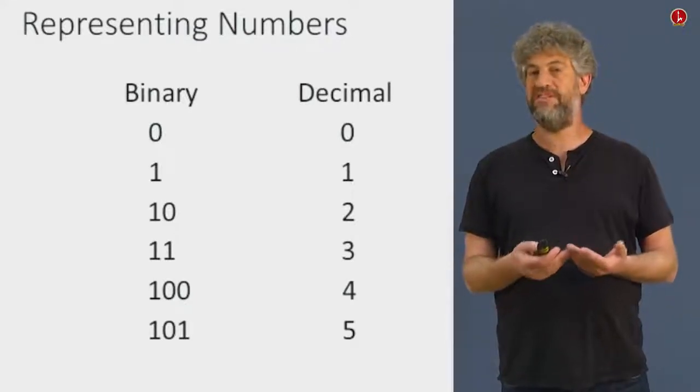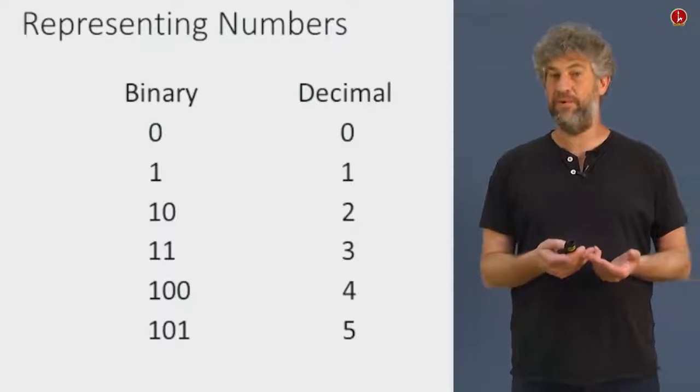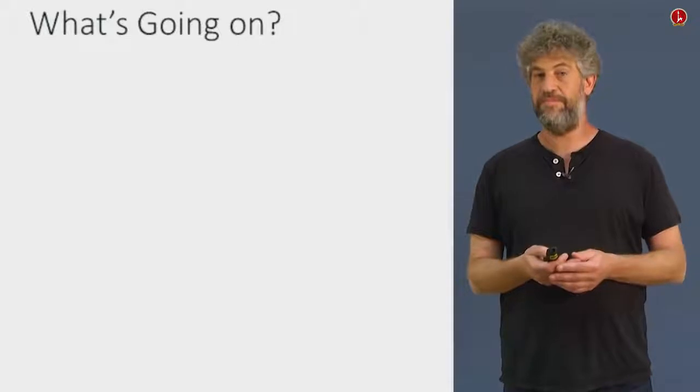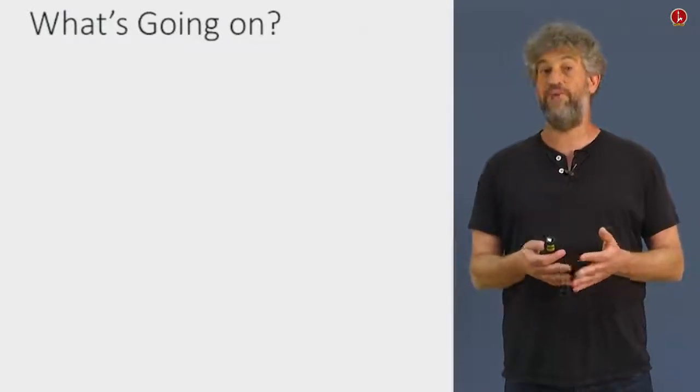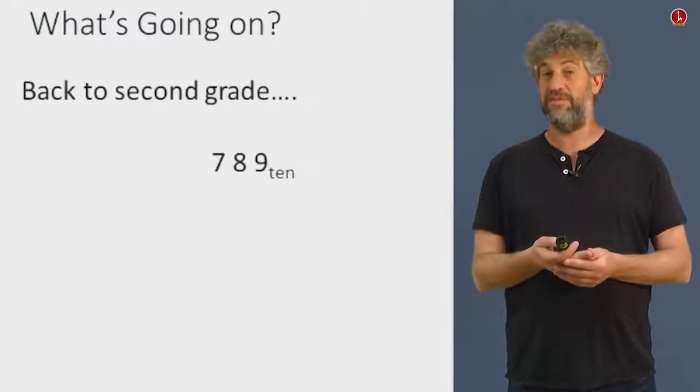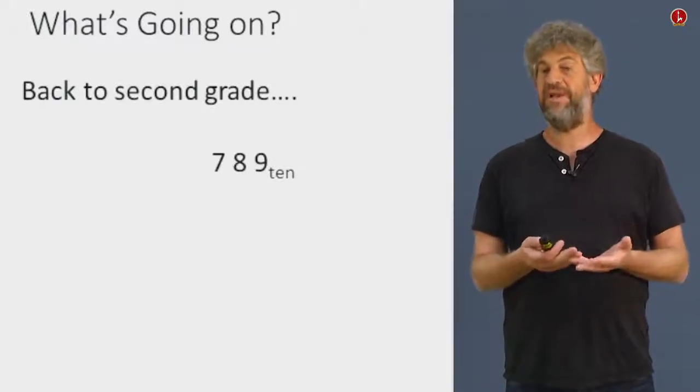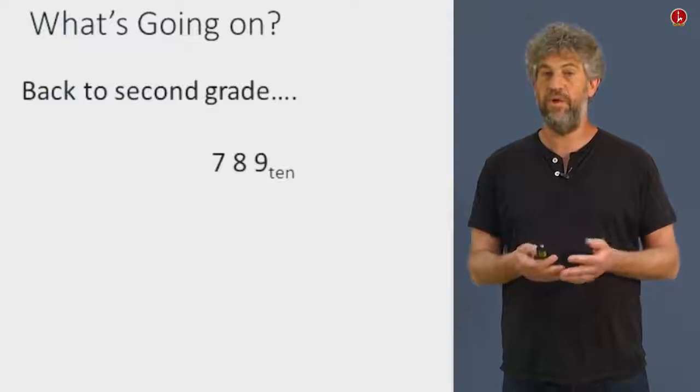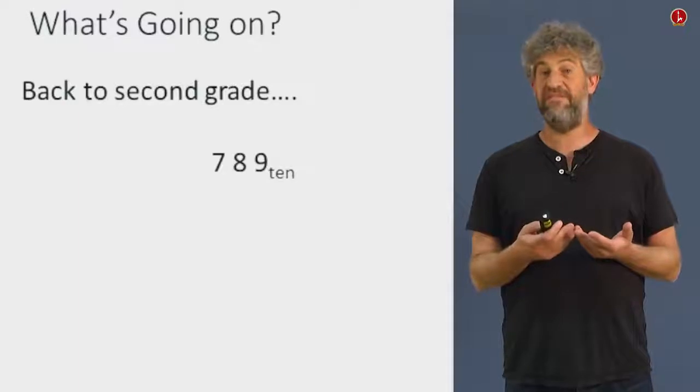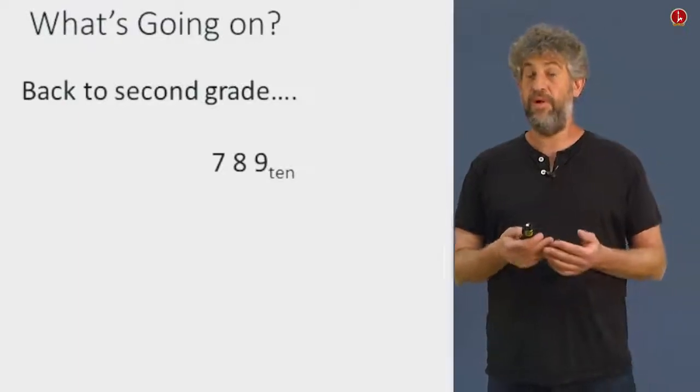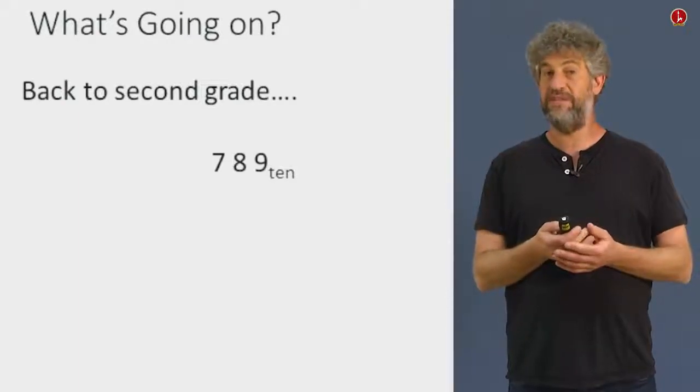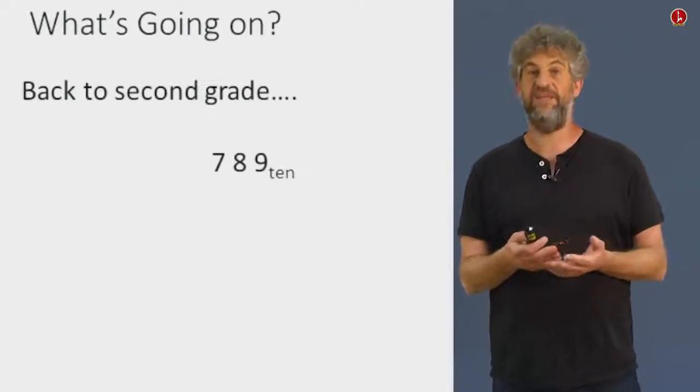Now, how did we connect the sequence of bits, the binary representation of an integer number to the integer number? What's going on? What's the general system? In order to understand that, we have to go back to second grade. When we learned about decimal numbers, we see 789. What does that mean? Where, what does the digits 7, 8, and 9 have to do with the value of the number 789? Well, we learned that we have the positional system, where the rightmost digit is the ones, the next one is the tens, the next one is the hundreds.